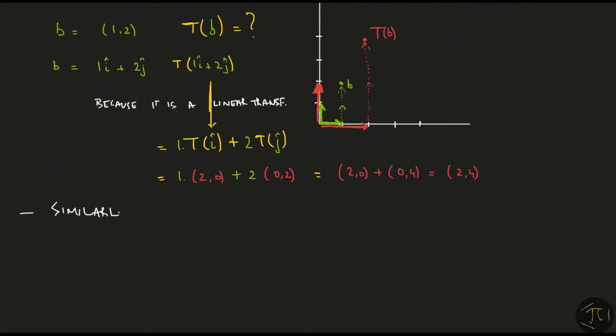Similarly, every vector in the input space can be written as a linear combination of the basis i hat and j hat. So we can find the transformation of any vector in the input space just by defining what happens to the basis vectors. This right here is the reason linear transformations are so popular.